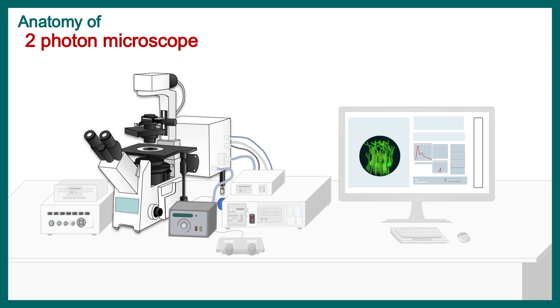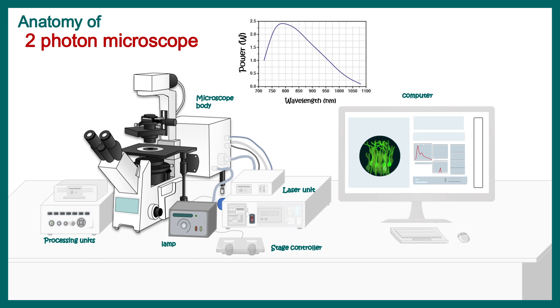Let's understand the anatomy. This is a microscope body. This is a laser unit. In this case a different laser is used. This is the stage controller lamp maybe for visualization purposes only, we don't use it for imaging. There's a processing unit which connects the software with the microscope and this is a computer screen where you see your images. The laser power is continuous wavelength. You can achieve different wavelengths using these two photon lasers. It is a tunable laser.